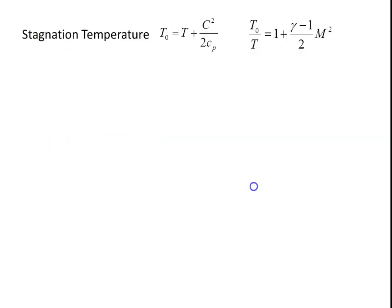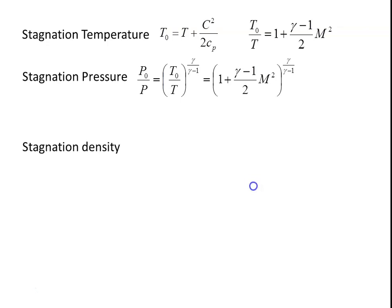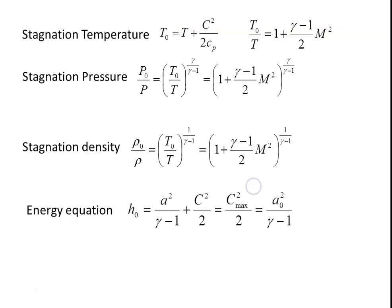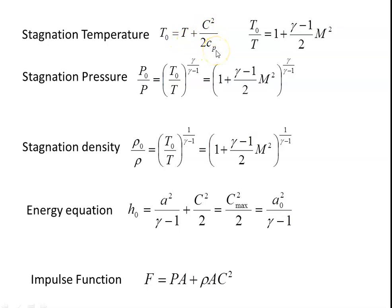We recollect the information discussed earlier. These equations we are going to use in our calculations. Stagnation temperature is given by T₀ = T + C²/2Cp, and T₀/T = 1 + (γ-1)/2 · M². M is the Mach number, C is the velocity, and Cp is the specific heat of the gas. The stagnation pressure is given by P₀/P = (T₀/T)^(γ/(γ-1)).